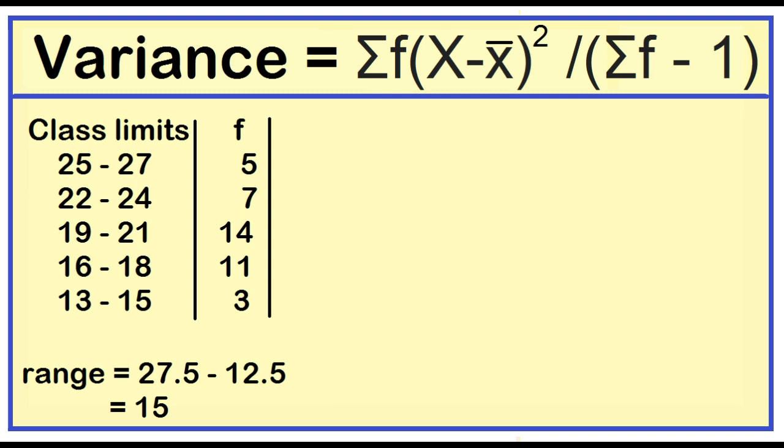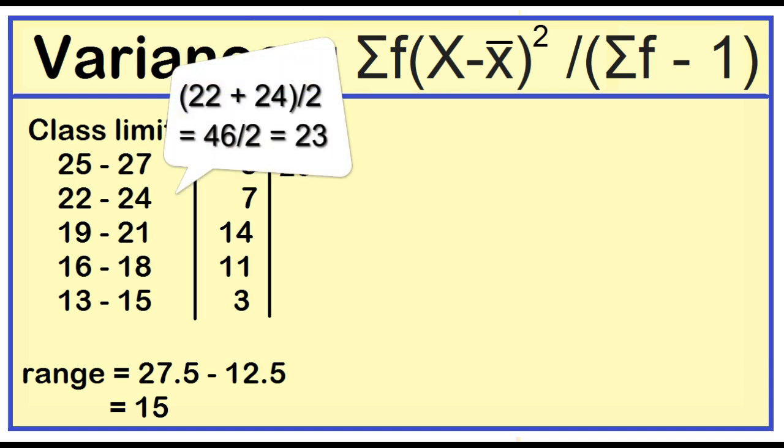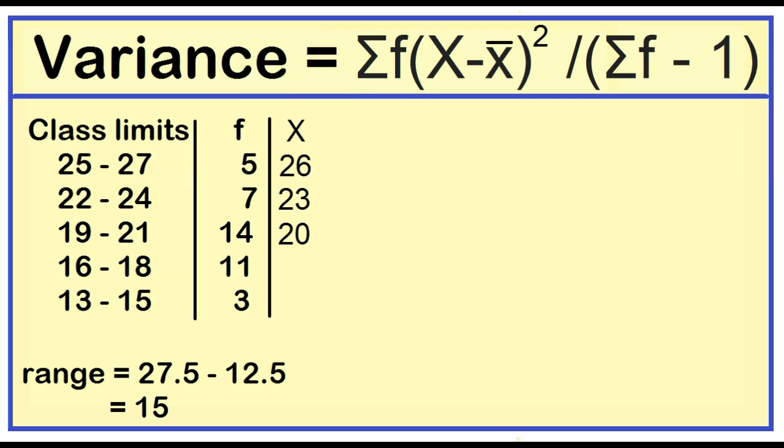Let's add a column for class marks. To find the class mark, just add the lower limit and the upper limit, then divide the result by 2. 25 plus 27 is 52 divided by 2 is 26. 22 plus 24 is 46 divided by 2 is 23. Next is 20, 17, and 14.